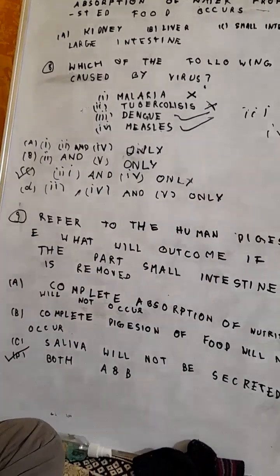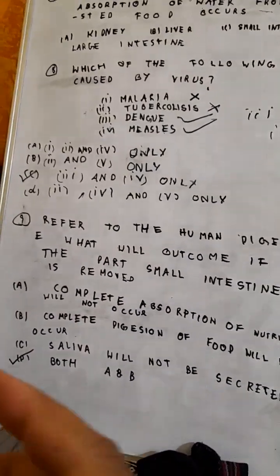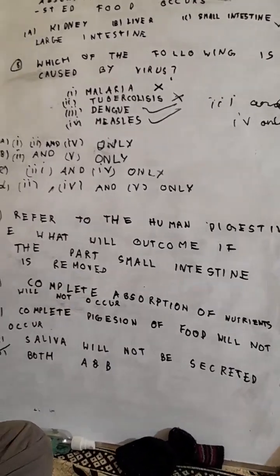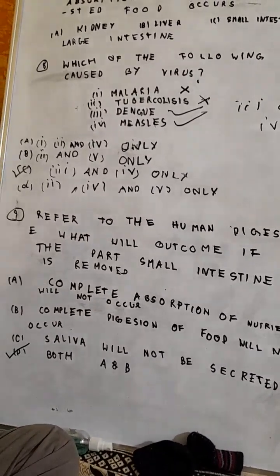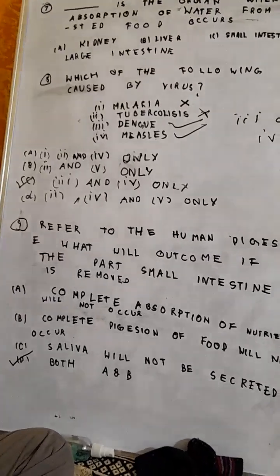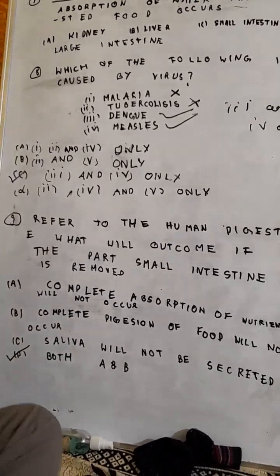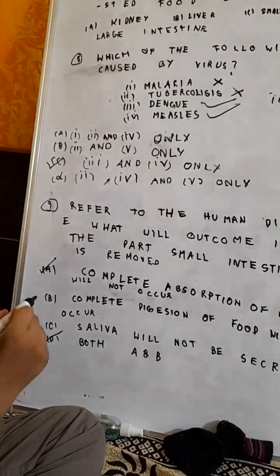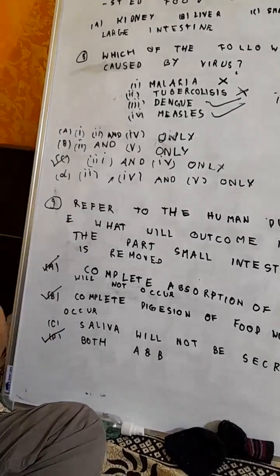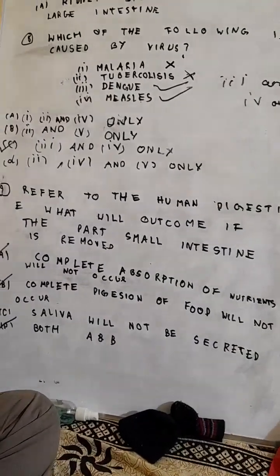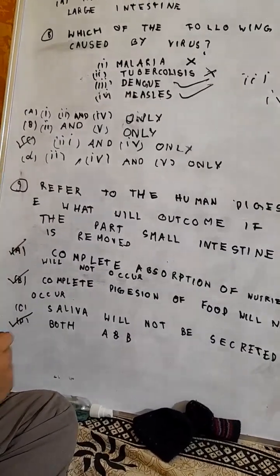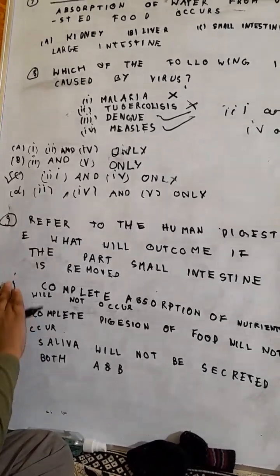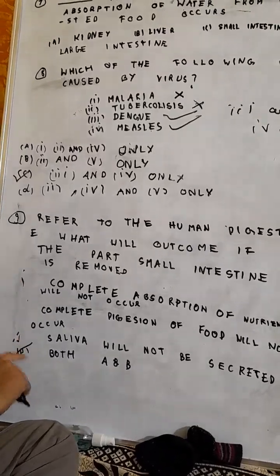Refer to the human digestive system. What will happen if the small intestine is removed from the human digestive system? Complete absorption of food will not occur — yes, this is correct. Complete digestion of food will not occur — this is correct. Saliva will not be secreted — no, this is incorrect. So the correct option will be option D, both A and B.